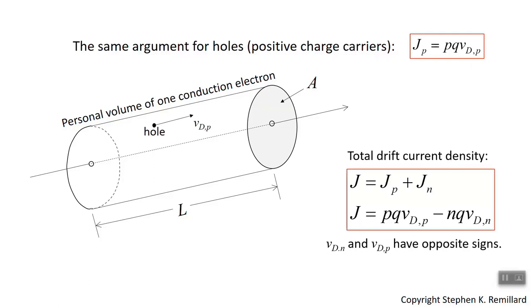You should expect both electrons and holes in your semiconductor — they're both conducting in opposite directions, and their currents will add. The total current is the hole current plus the electron current. So the hole current density is pq times the drift velocity of holes, and the electron current density is minus nq times the drift velocity of electrons. If I have a thousand holes going right and a thousand electrons going left, I have two thousand units of charge going right — they add, they don't cancel.